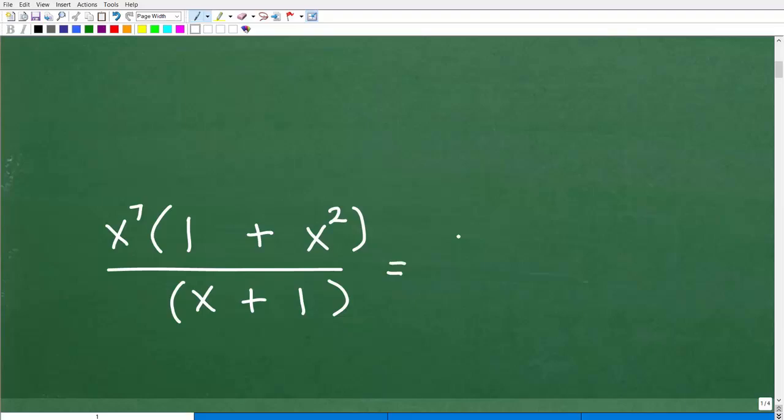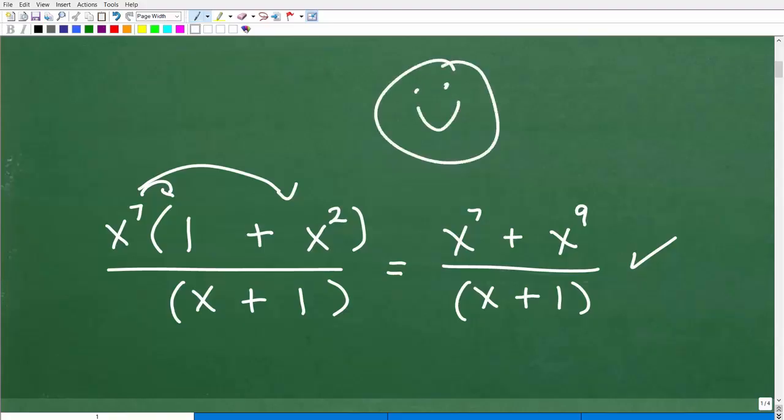Now, if you have this version, you could have had x to the seventh plus x to the ninth over x plus one. Basically, what happened there is you just distributed that x to the seventh back in. This is definitely acceptable as well. But either answer will work. And if you did this correctly, if you got one answer or the other, well, let me go ahead and give you a nice little happy face and a plus a 100% and a few stars to celebrate your success in algebra today. Nice job.